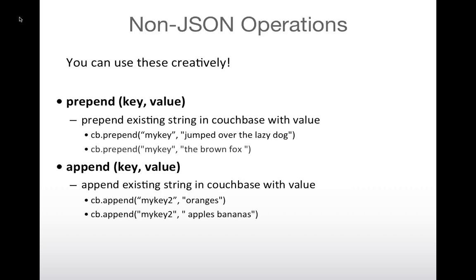There are also non-JSON operations dealing with strings: prepend and append. You can do interesting things like create lists with delimiters. For example, I added 'the brown fox' to 'jump over the lazy dog,' or created a list of fruits. These operations are native to Couchbase itself. They're not as frequently used, but there are some creative things you can do.